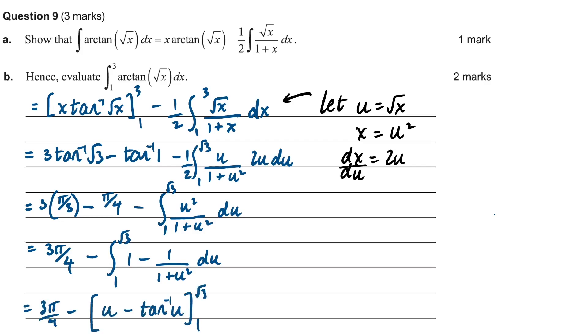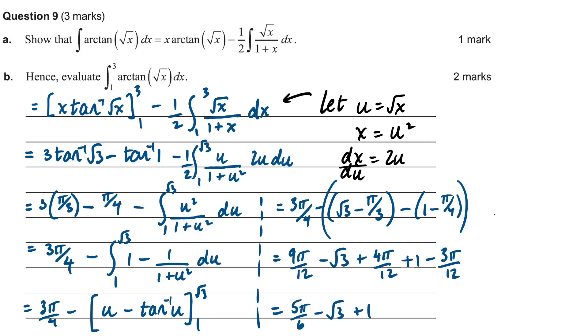Sub in the terminals, and this is what we get. Probably want to put all those fractions with pies over a common denominator of pi over 12. And finally simplify down to 5 pi on 6 minus root 3 plus 1. So definitely quite a tricky integral there for only two marks as well.